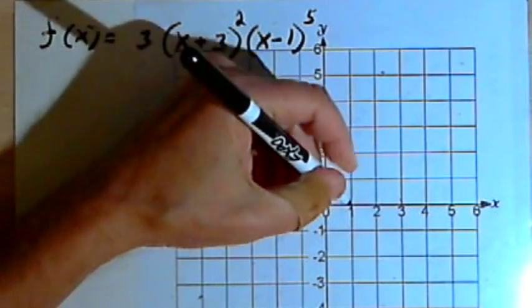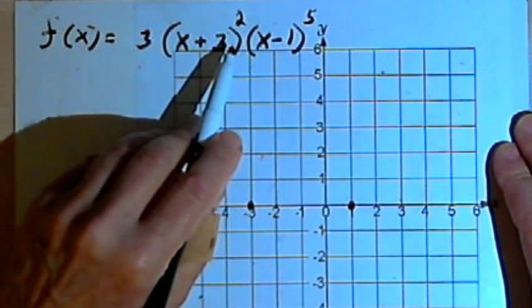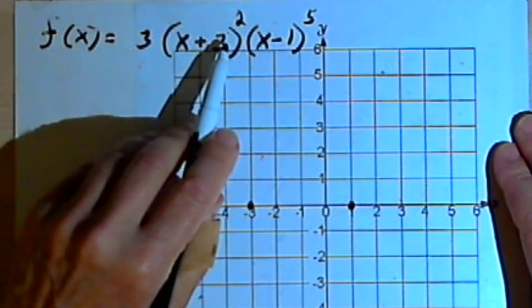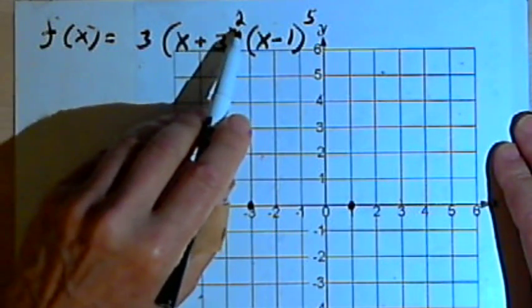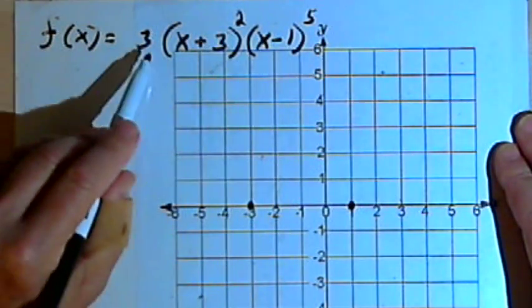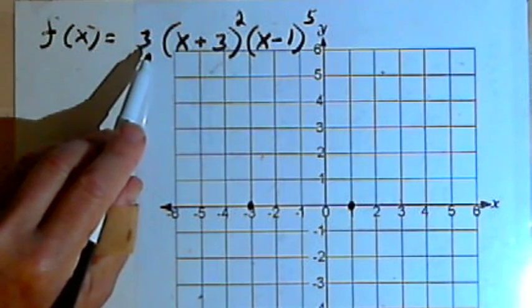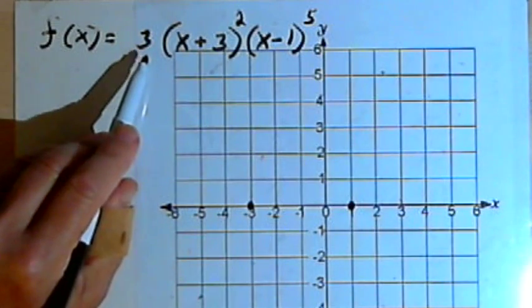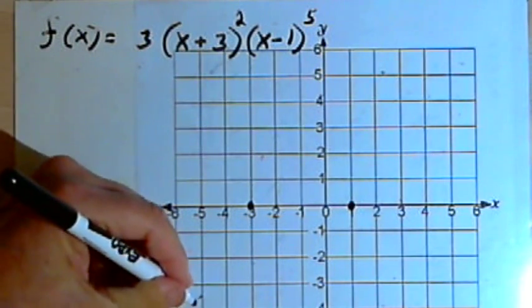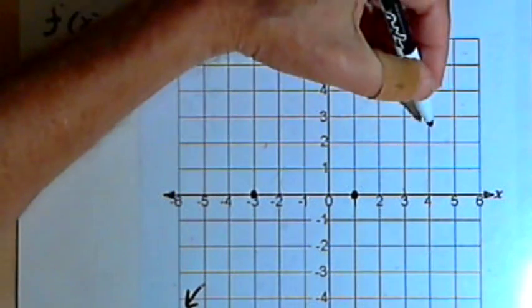The zeros are going to be the same place. The degree of this function is going to be 7. I've got a multiplicity of 2 and a multiplicity of 5. So that's 7 altogether. And it's got a positive lead coefficient. So if it's an odd degree with a positive lead coefficient, it's going to be down at the left side and up at the right.